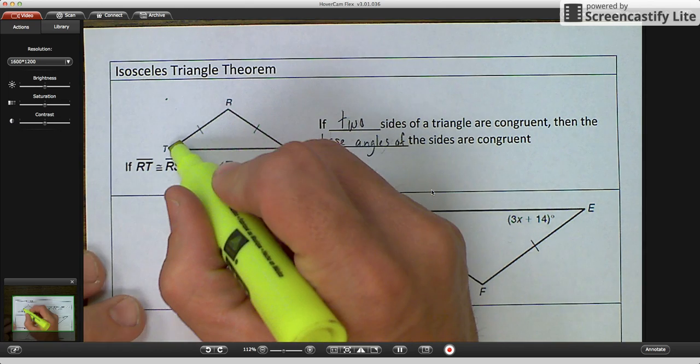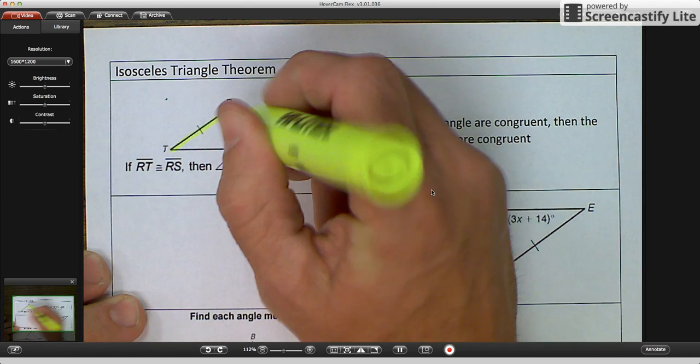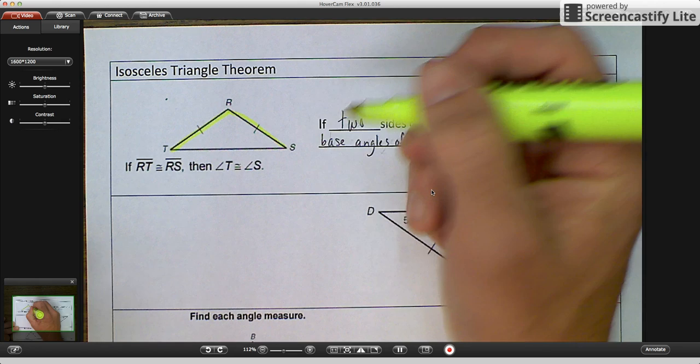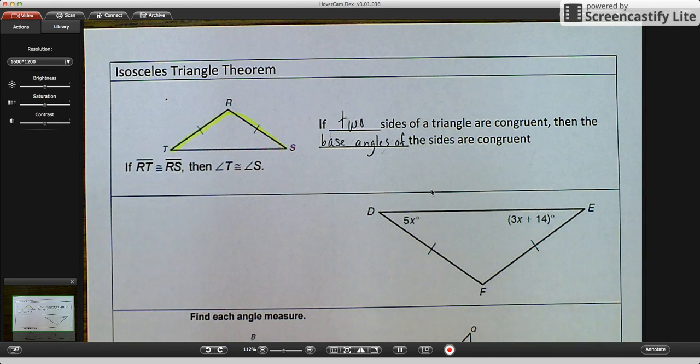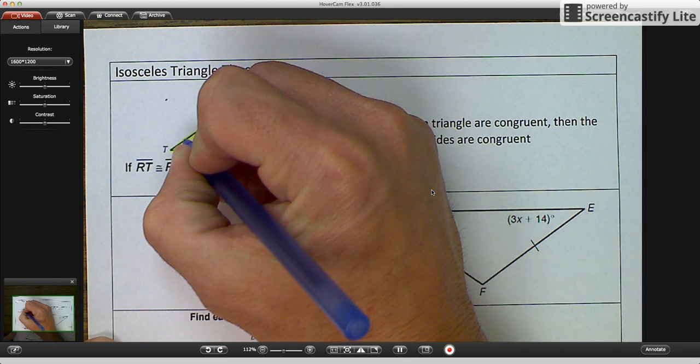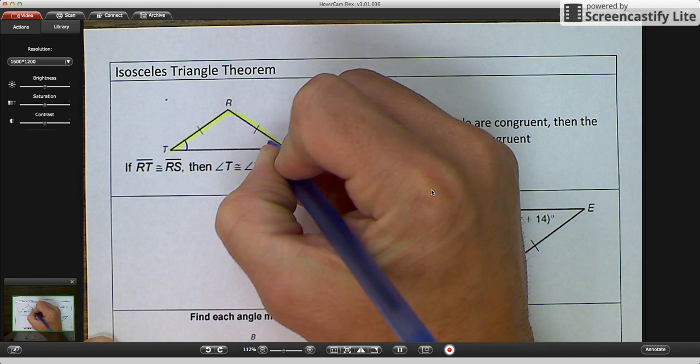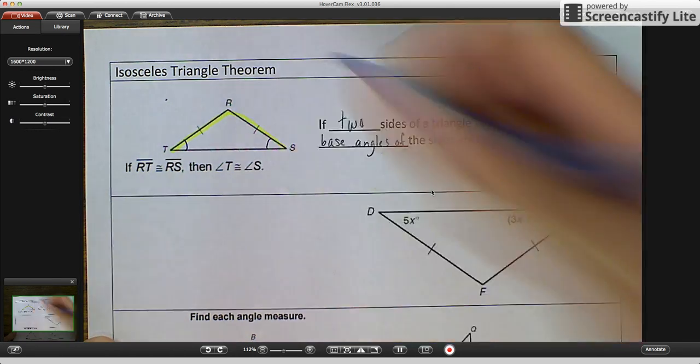As I look to my picture on the left, I see that side is congruent to that side. So TR is congruent to SR. The base angles are the angles that are opposite of the congruent sides or at the base of those sides.